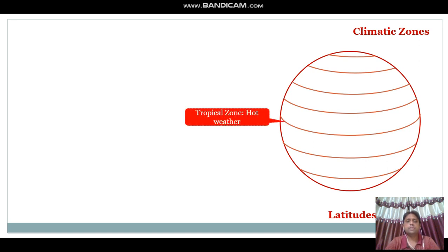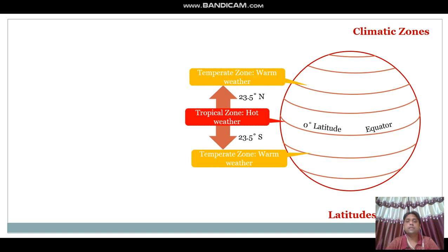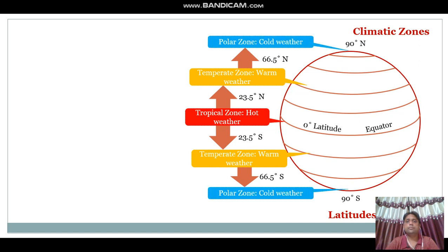The first zone is the tropical zone, which has hot weather and is confined to 0 degree latitude, also known as the equator. It extends from 0 to 23.5 degrees north and south. After that we have the temperate zone, where the weather is warm and most deserts are found. The temperate zone extends from 23.5 degrees to 66.5 degrees north and south.